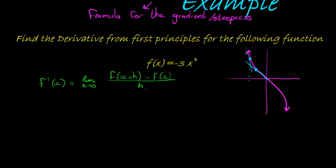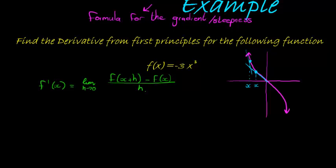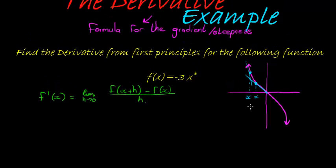So it depends on what x value I'm at. For different x values, we get different steepnesses or gradients. So the derivative is a formula, so that all I need to do with that formula is substitute in the x and I find the steepness at that point. So it's also a function.